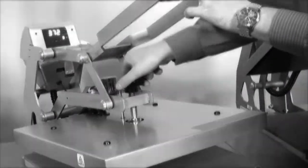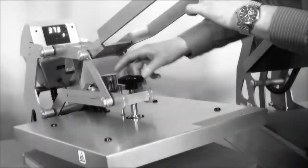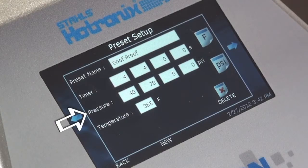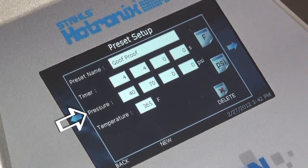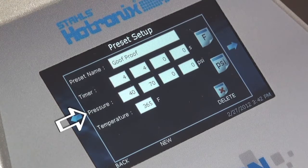Now, in the past on manual presses, you'd have to change the pressure by turning a knob until you have it dialed in. The Hotronix Air Fusion features an auto-adjusted pressure, controlled digitally on its touch screen display.